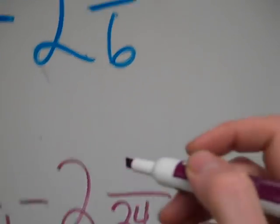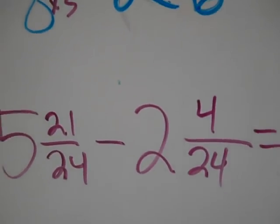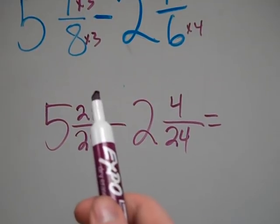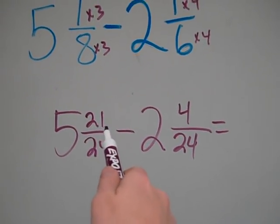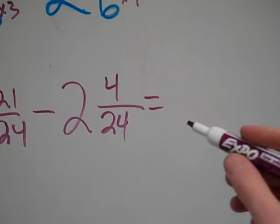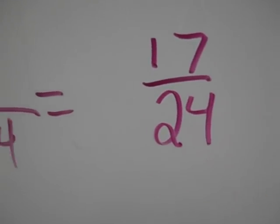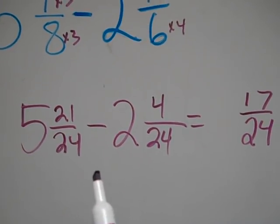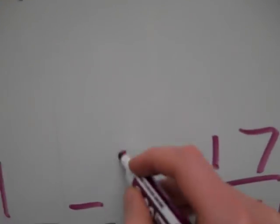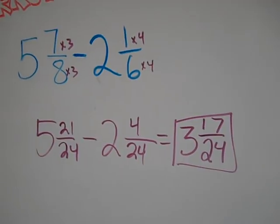And then 6 times 4 is 24, so I do 1 times 4, which is 4. Now this is the first type of problem where I don't have to borrow. I look at my numerators now that they're common: 21 minus 4 — can I do that? Yes. So 21 minus 4 is 17, and I keep my denominator the same. So 21 twenty-fourths minus 4 twenty-fourths is 17 twenty-fourths. Then I subtract my whole numbers: 5 minus 2 is 3. And 17 twenty-fourths is in simplest form, so I'm done.